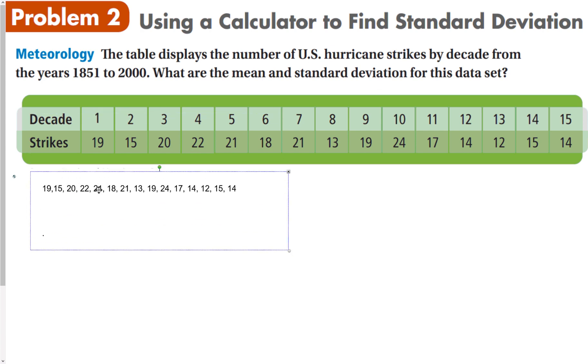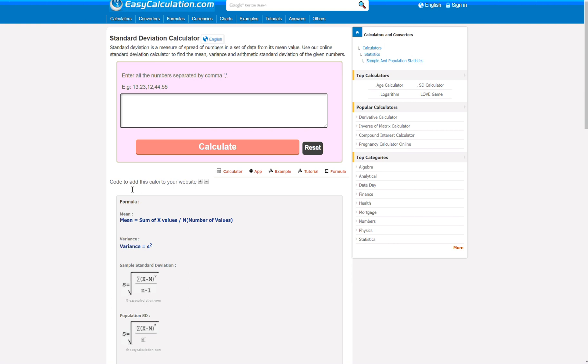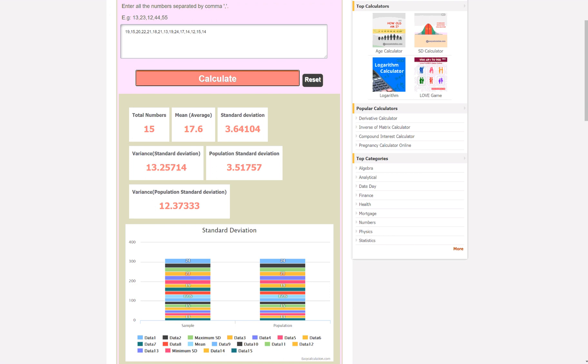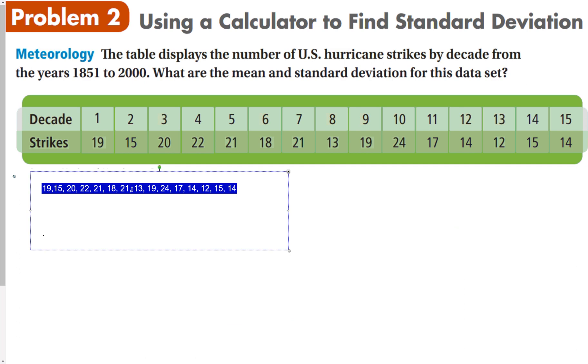I take all this data, copy it, and paste it in here. Now you can see it has my total numbers, the mean is 17.6. There's two different things here: standard deviation and population standard deviation. There's a slight difference between the two. We want the population standard deviation, so here's my standard deviation 3.51 and my variance is 12.37. Much easier if you have a calculator that can help you out.